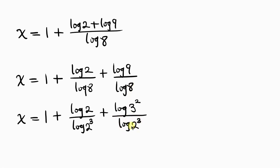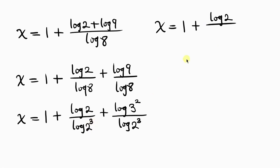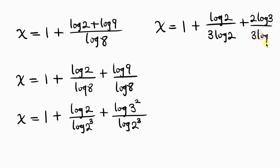Applying the law of logarithm here, we have x equal to 1 plus, on the numerator log 2, all over the denominator — according to the law of logarithm — 3 log 2. Plus, applying the law of logarithm to log 3 squared, we have 2 log 3, all over the denominator 3 log 2.